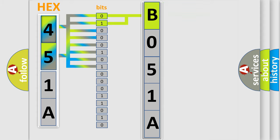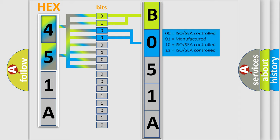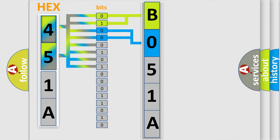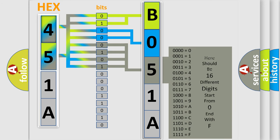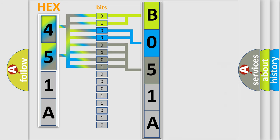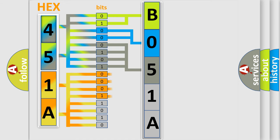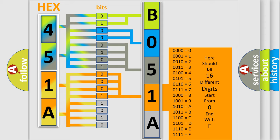The next two bits determine the second character. The last bits of the first byte define the third character of the code. The second byte is composed of a combination of eight bits. The first four bits determine the fourth character of the code, and the combination of the last four bits defines the fifth character.